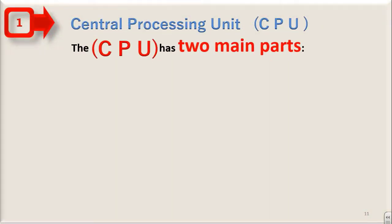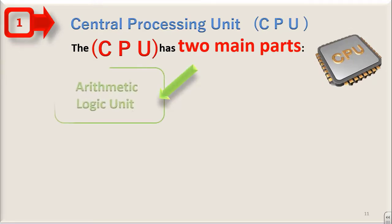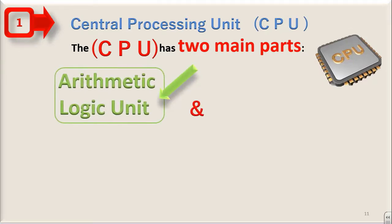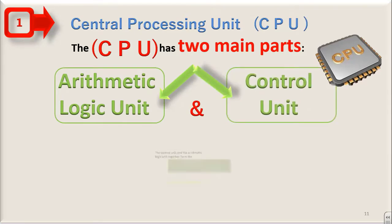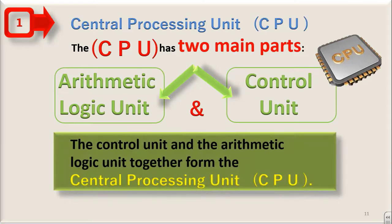The CPU has two main parts: Arithmetic Logic Unit and Control Unit. The Control Unit and the Arithmetic Logic Unit together form the Central Processing Unit, CPU.